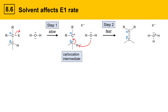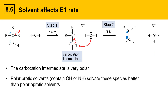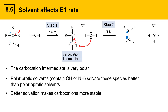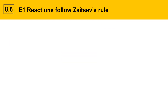Solvent also affects the E1 reaction rate. The reason is that the carbocation intermediate is very polar, and polar protic solvents — which contain OH or NH — solvate these polar species better than polar aprotic solvents. The carbocation is well solvated by polar protic solvents, as is the leaving group X⁻. Strong solvation of those polar intermediates makes carbocations more stable, which makes them form faster, helping speed up the E1 mechanism.